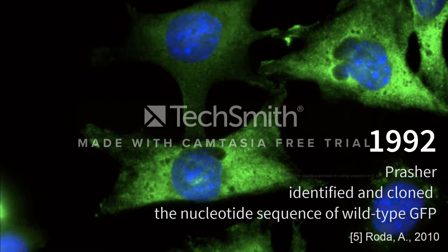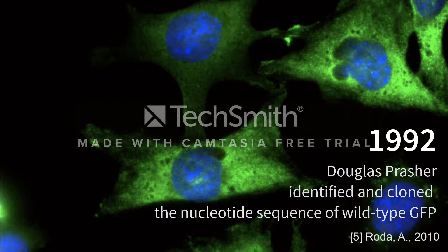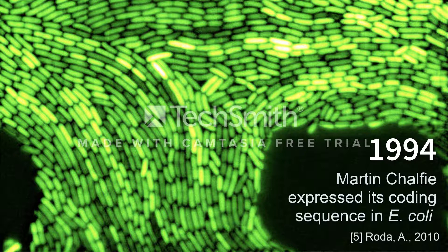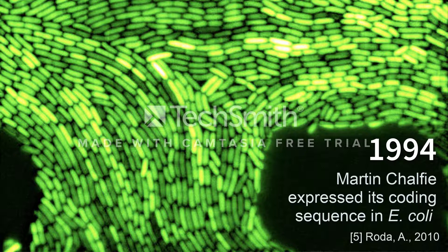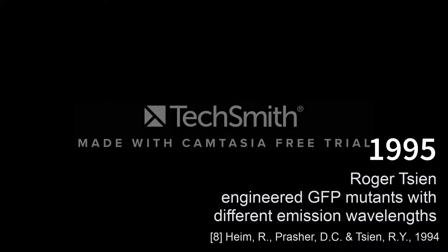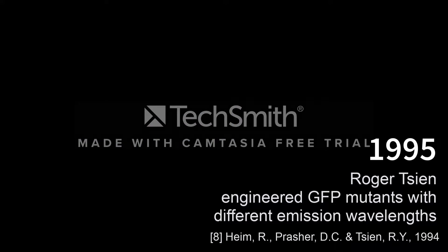In 1992, Douglas Prasher identified and cloned the nucleotide sequence of wild-type GFP. This was incredibly important as the population of the organism had dwindled. In 1994, Martin Chalfie expressed its coding sequence in E. coli. In 1995, Roger Tsien engineered the wild-type GFP, creating several mutants with different emission wavelengths, allowing them to show in colours other than green, and at the same time improved thermostability.